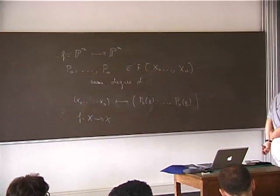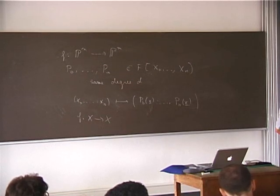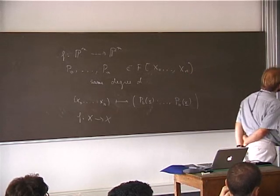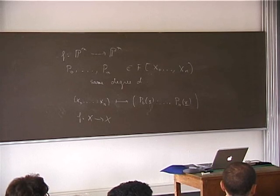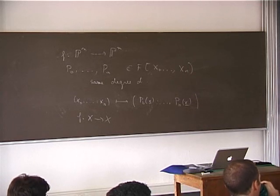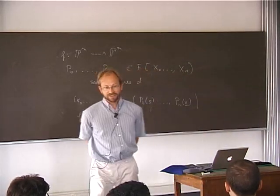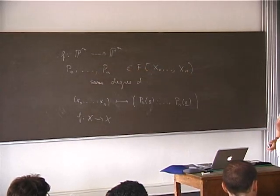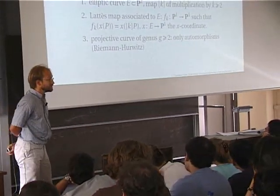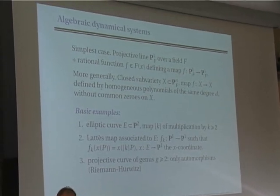Basic examples are elliptic curves with the multiplication-by-k map for some integer k greater than 2. There is a very interesting map on P1 induced by elliptic curves: if you look at the multiplication-by-k map on an elliptic curve, the x-coordinate of the image depends only on the x-coordinate of the point. This map is called the Lattès map because it was studied by Lattès in the 19th century: f_k(x(P)) = x(kP). We mostly see rational varieties like P1, elliptic curves, or abelian varieties, because for projective curves of genus g greater than 2, the Riemann-Hurwitz formula shows that the only endomorphisms are automorphisms, so the dynamical theory is not very interesting.